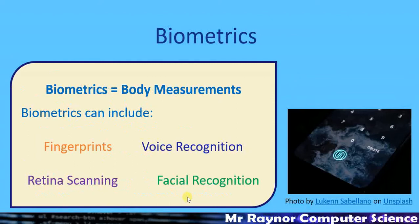Biometrics — if we break down the word, 'bio' means body and 'metrics' means measurements, so it literally means body measurements. Examples include fingerprints, voice recognition, retina scanning, and facial recognition. Many phones now include a fingerprint sensor. Retina scanning is used to allow access to rooms, and facial recognition is used in things like passport checks at airports. Some people think biometrics will replace passwords, but ultimately we're likely to need a combination of both.